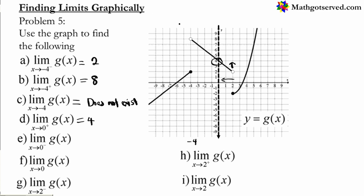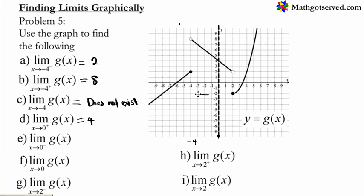Now what happens when approaching from the left? If you are approaching 0 from the left, you are going in this direction. Like driving a car on this line going in this direction, you notice that you are going down — your y value is decreasing because you have a downward slope. But as you approach 0 going down, you are approaching exactly the same value as from the other direction, which is 4. So your left-hand limit is also 4.